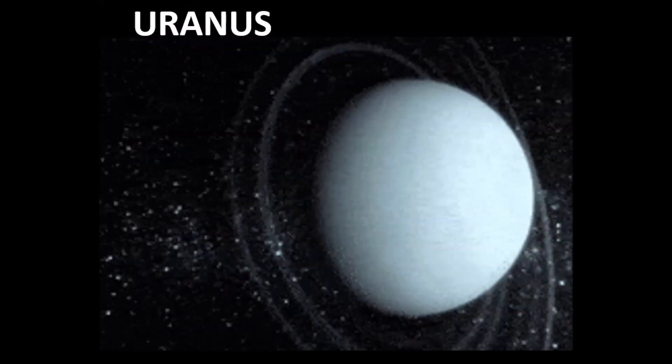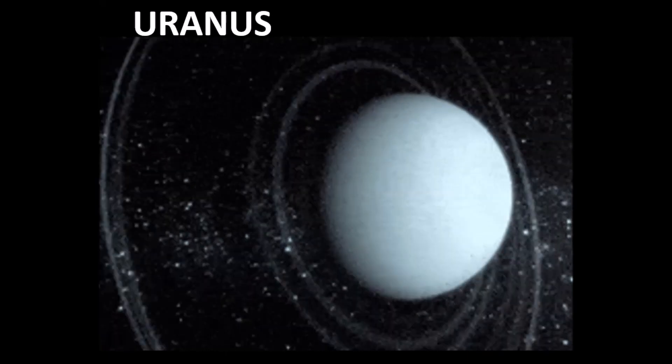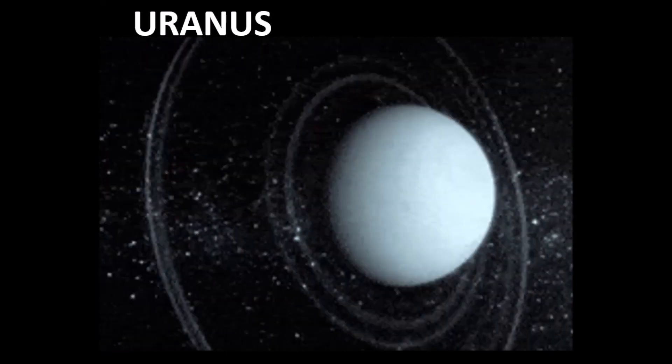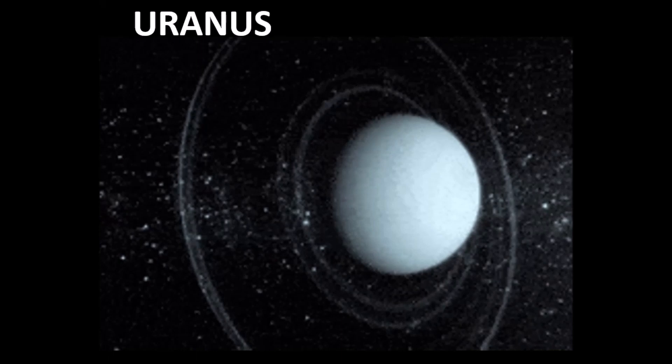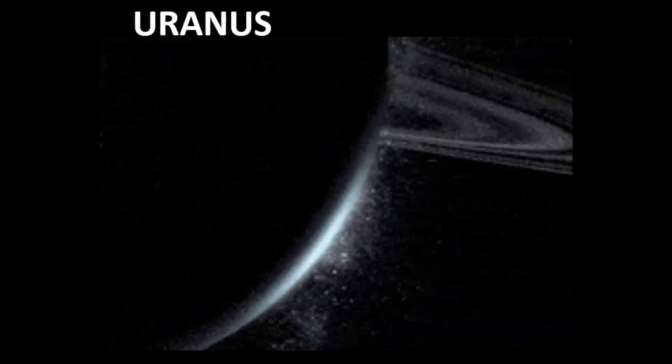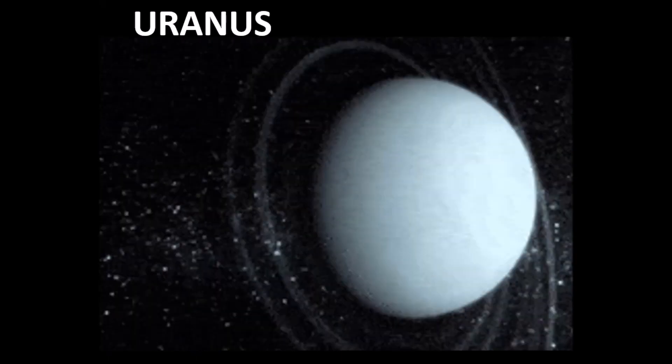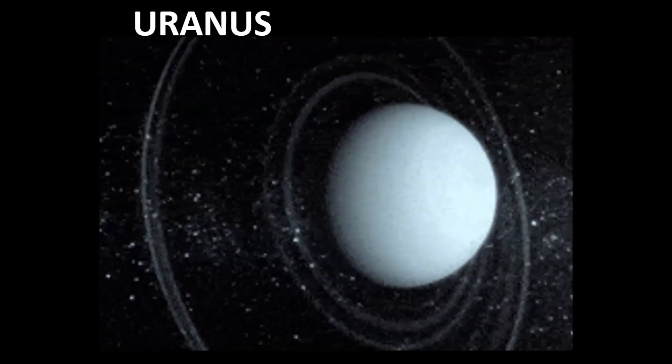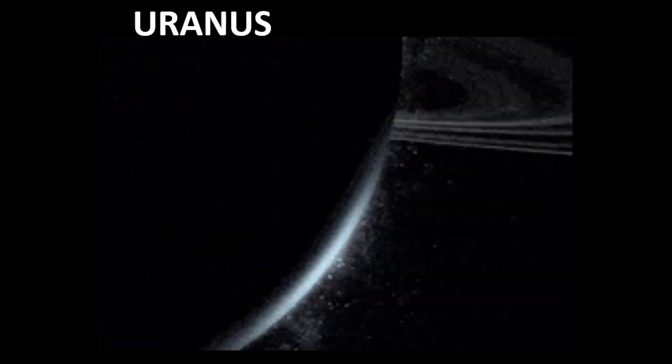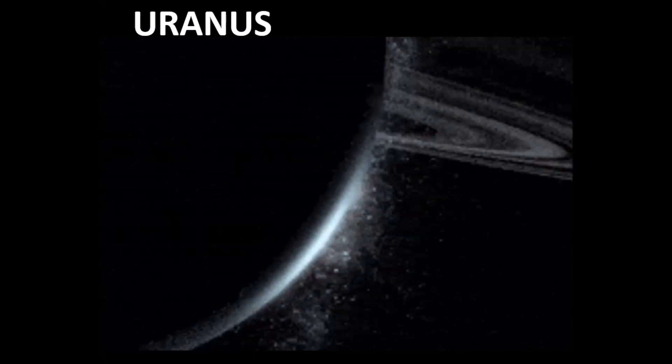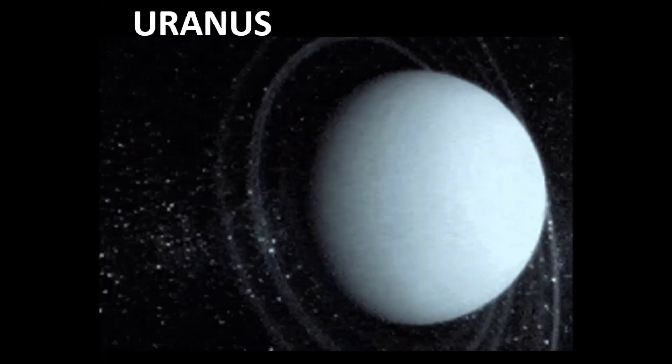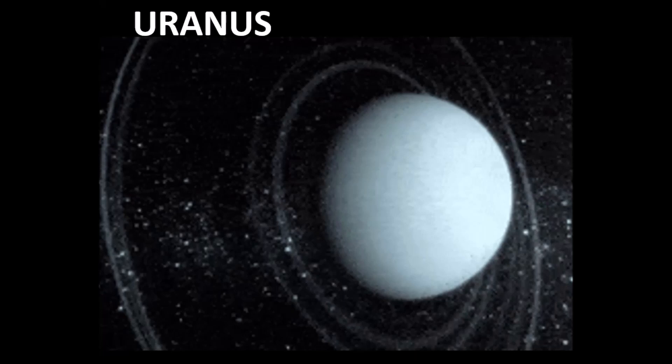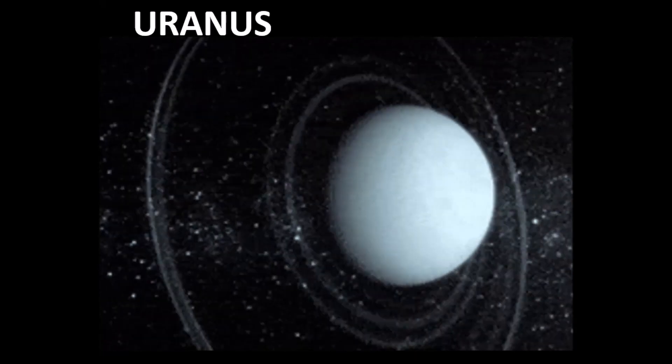The next planet is Uranus. You know it spins like a ball. Actually not spin. It rolls like a ball. All the planets spin like a top. But it rolls like a ball in the solar family. And similar as Venus, it also rolls from east to west, opposite other than planet.